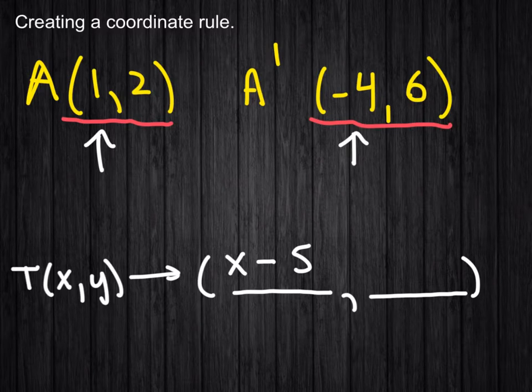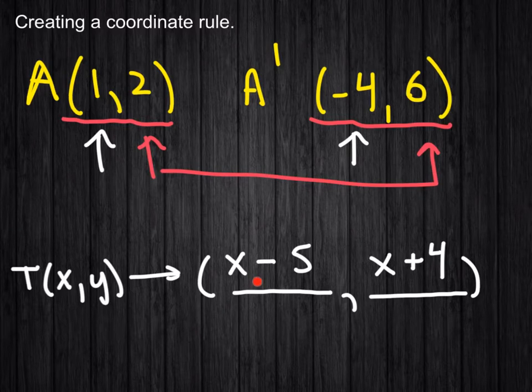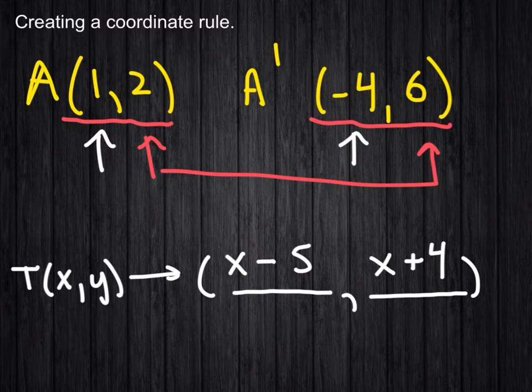And then we would do the same thing, looking at the 2 and at the 6. And so, it looks like we added 4 to get to that value. So, what it's asking you to do is to create the coordinate rule here, x minus 5 and x plus 4.